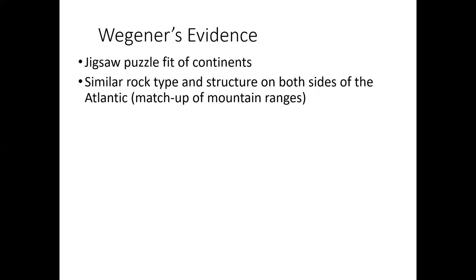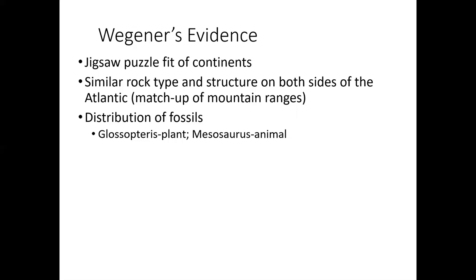The first piece of evidence was the jigsaw puzzle fit of continents, but Wegener took it further. He said not only do they look like they fit together, but when you look at the rock types and structures on both sides of the Atlantic, they match up. Where you have a mountain range on one side of the Atlantic, there's a mountain range on the other side. Where you have a particular rock type on one side, that same rock type is found in Africa on the other side.